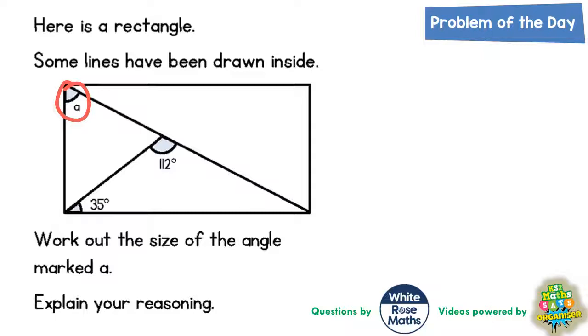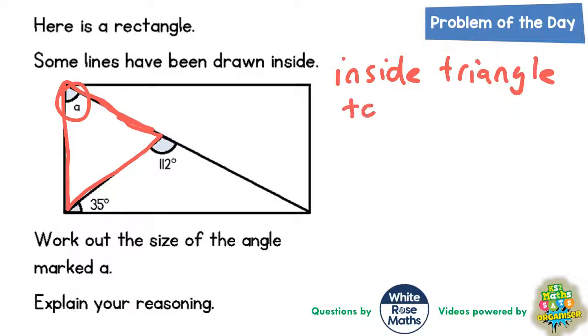So the key thing here is that A is inside a triangle. If we can work out the other angles inside the triangle, we know that angles inside a triangle add up to 180 degrees. So inside a triangle it must total 180 degrees.